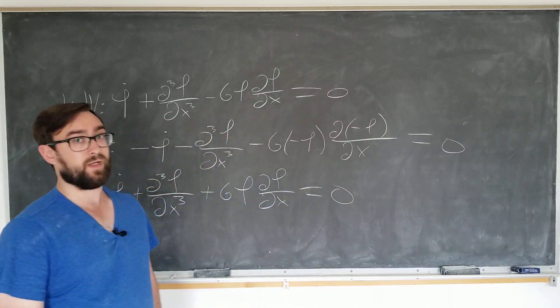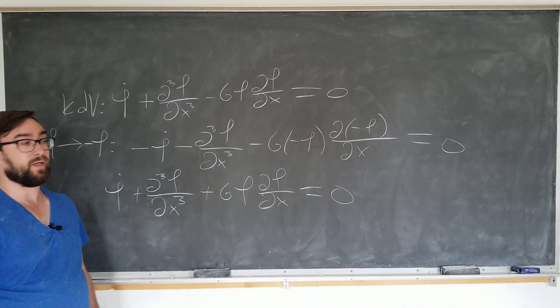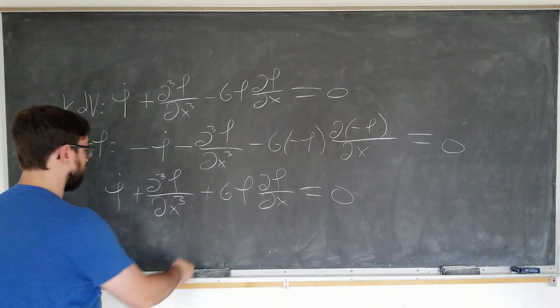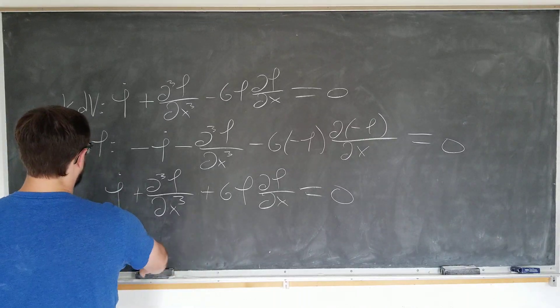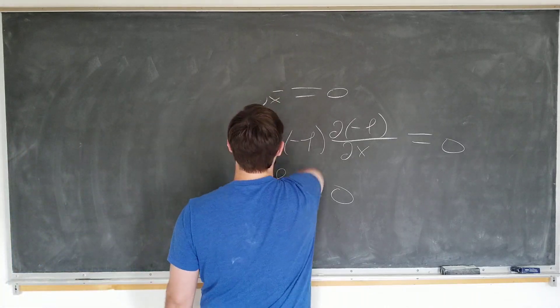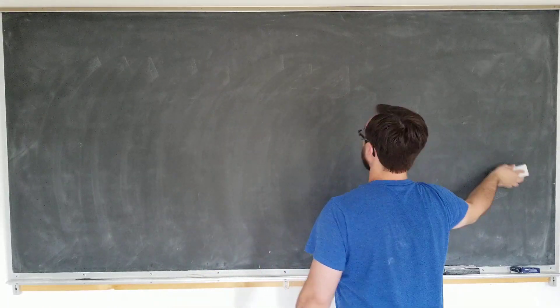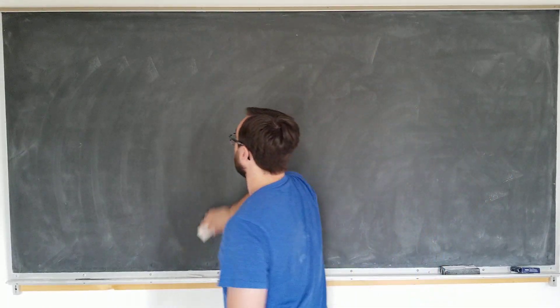This is actually the equation that we'll be deriving in this video. They're both called the KDV equation. There are actually a lot of similar equations of the KDV form. It doesn't really matter to be honest. All right. So we want to derive this using the Euler-Lagrange equations. To do that, we need to put in a Lagrangian.